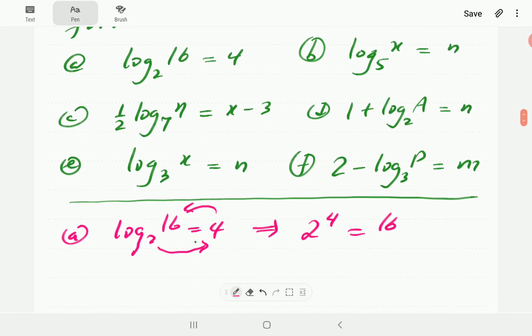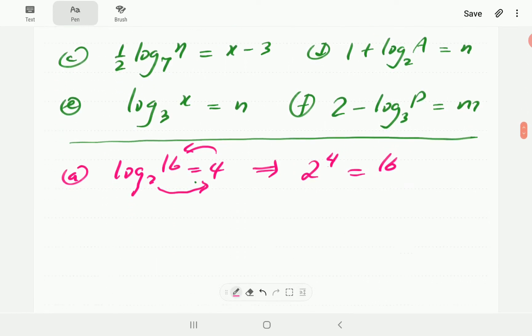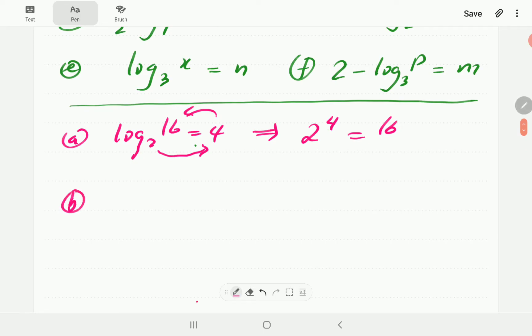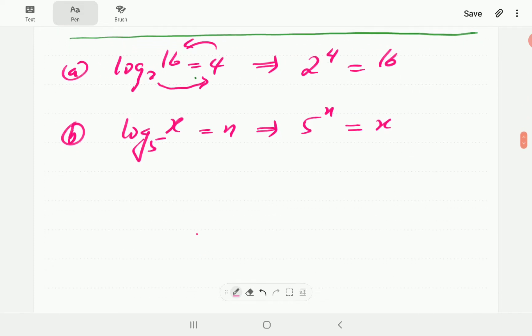And then in part b, we've got log x base 5 is n. So, the base is 5. The exponent is n. And so, this is going to be equal to x. We've got 5 to the power n is equal to x.